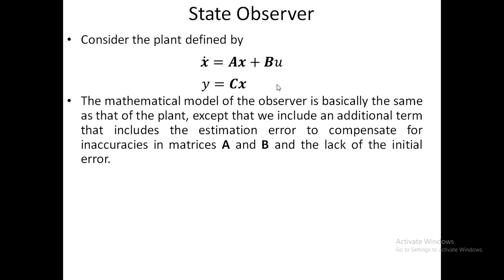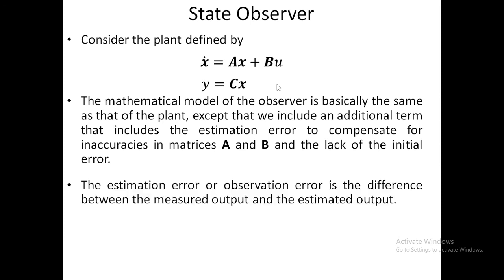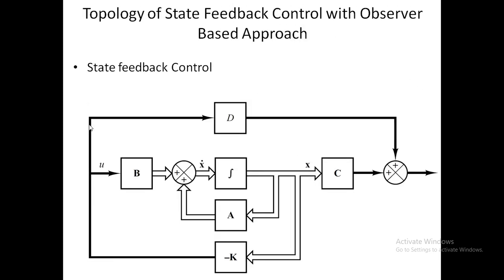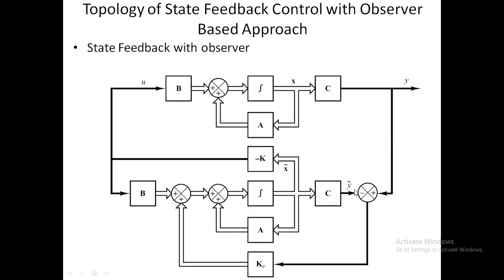The mathematical model of the observer is basically the same as the plant, except we include an additional term to compensate for inaccuracies in matrices A and B and initial estimation errors. The estimation error, or observational error, is the difference between the measured output and the estimated output. In the block diagram, the measured output minus the estimated output is fed to the gain Ke.